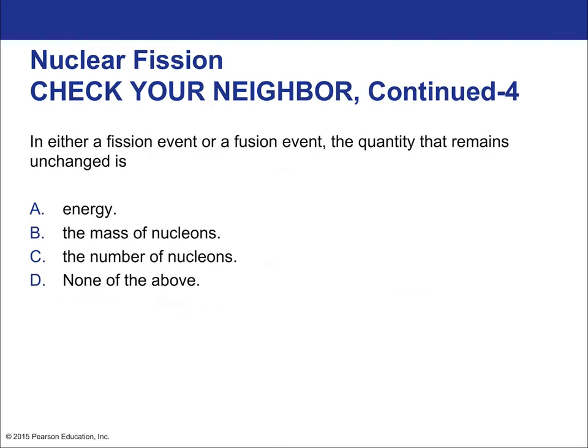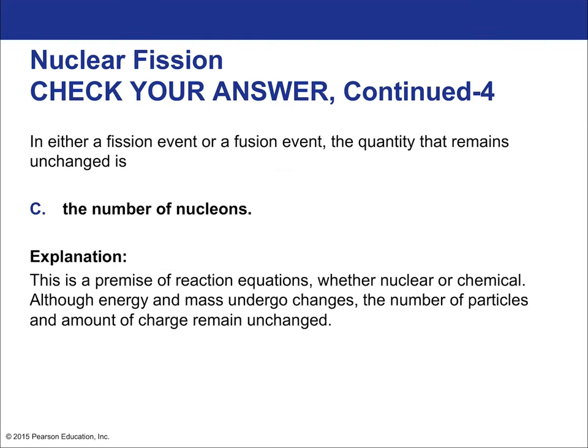In either a fission or fusion event, the quantity that remains unchanged is the number of nucleons. We never completely lose a nucleon — particles can change type but are conserved. This conservation reflects a deeper principle seen in particle physics: the quarks that are the building blocks of nucleons are themselves conserved, which is what ultimately allows us to conserve the nucleon count across all nuclear reactions.